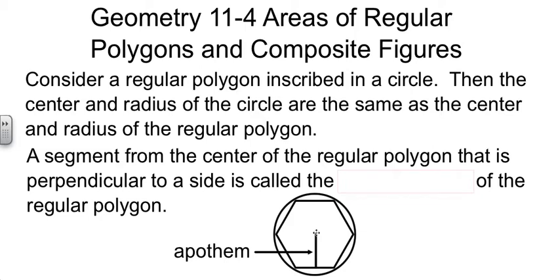The center and the radius of the circle are going to be the same as for the polygon. So the center of the polygon will be in this same place. A line drawn from the center to this vertex here would also be the radius of the circle. Now, if I take a segment from the center and draw it in perpendicular to one of the sides, that's called the apothem of the polygon.